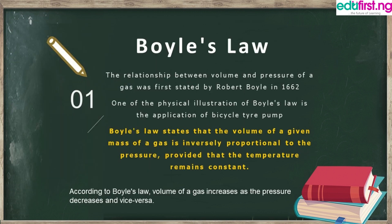Let's proceed to Boyle's Law. The relationship between volume and pressure of a gas was first stated by Robert Boyle in 1662. Boyle's Law states that the volume of a given mass of gas is inversely proportional to the pressure, provided that the temperature remains constant. So the volume of a gas increases as the pressure decreases, and vice versa.